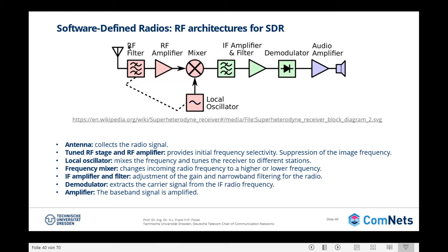Here is a brief explanation of all the building blocks of the Superheterodyne architecture. We have the antenna that collects the radio signal. Then we have a stage of tuned radio frequency amplification that provides initial frequency selectivity and suppression of the image frequency. The oscillator mixes the frequency and tunes the receiver to different stations. The frequency mixer changes the incoming frequency to a higher or lower frequency. Then in the intermediate frequency amplifier and filter, an adjustment of the gain and narrow-band filtering takes place. Finally, the demodulator extracts the signal from the intermediate frequency, and we have a final amplification stage of the baseband signal.